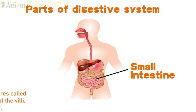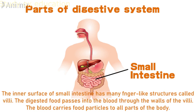The inner surface of the small intestine has many finger-like structures called villi. The digested food passes into the blood through the walls of the villi. The blood then carries food particles to all parts of the body.